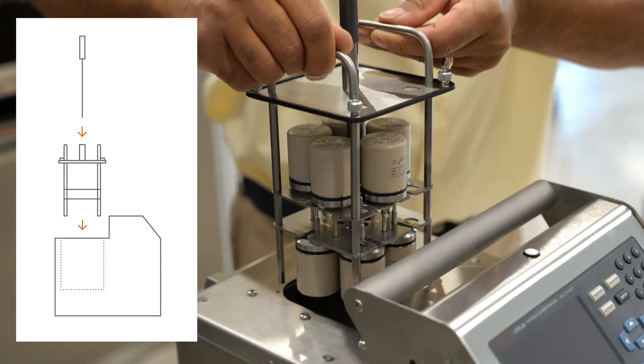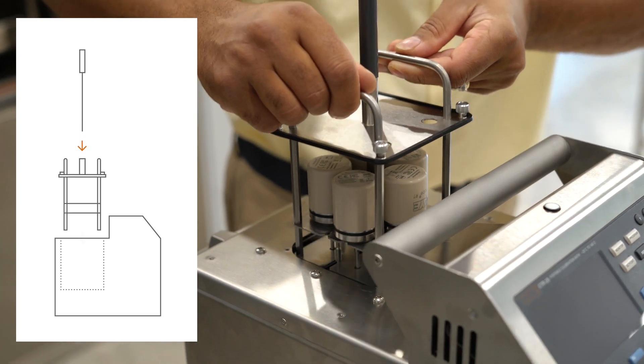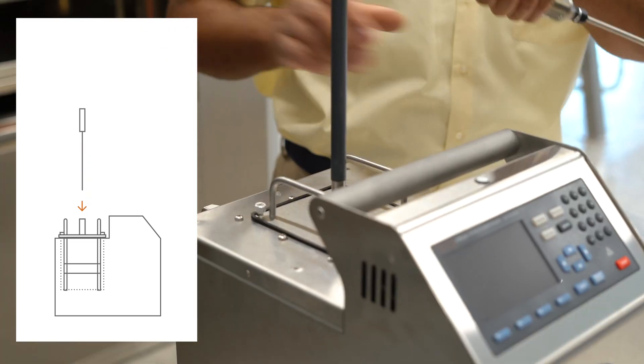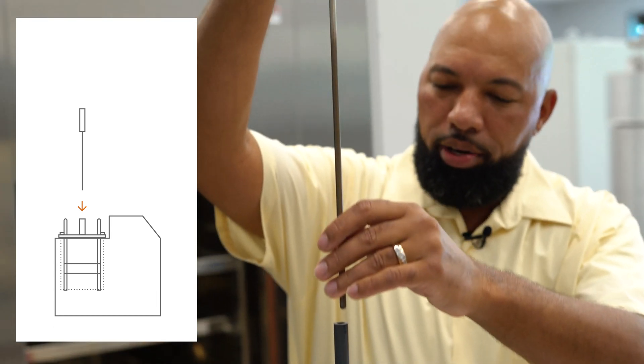Once your loggers are inside the tray, you would then submerge the loggers into the oil. Once inserted in the oil, you would then insert your IRTD.